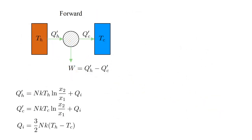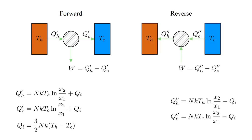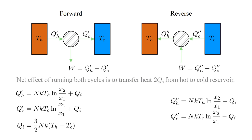Shown here schematically: in the forward cycle, heat energy Q-hot prime is extracted from the hot reservoir, a portion W is converted into work, and the remainder Q-cold prime is delivered to the cold reservoir. Both Q-hot prime and Q-cold prime are larger than the Carnot cycle values by the term Q-I. In the reverse cycle, work W is done on the system, causing heat Q-cold double prime to be extracted from the cold reservoir, and heat Q-hot double prime to be delivered to the hot reservoir. Both Q-hot double prime and Q-cold double prime are smaller than the Carnot cycle values by the term Q-I. The net effect of running both cycles is to extract from the hot reservoir heat Q-hot prime minus Q-hot double prime, which equals two Q-I, and deliver to the cold reservoir heat Q-cold prime minus Q-cold double prime, which also equals two Q-I.